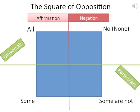So we have universals, particulars, affirmation, and negation — four quadrants of this square of opposition. These are separators to help us divide up those quantifiers.